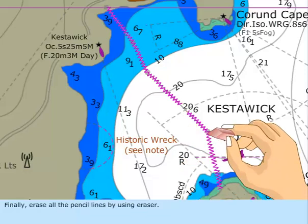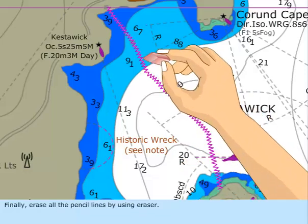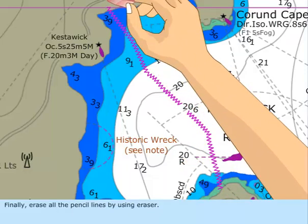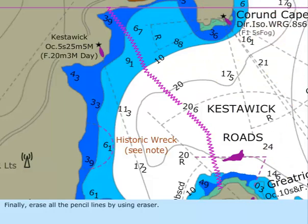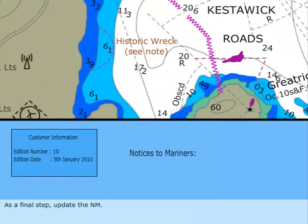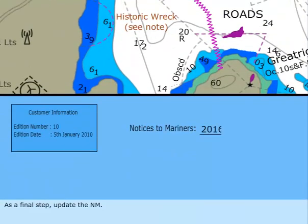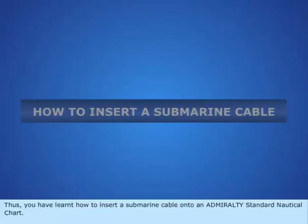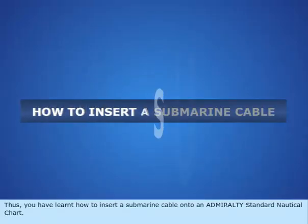Finally, erase all the pencil lines by using the eraser. As a final step, update the NM. Thus, you have learnt how to insert a submarine cable onto an Admiralty Standard nautical chart.